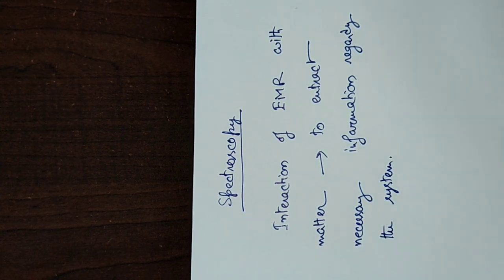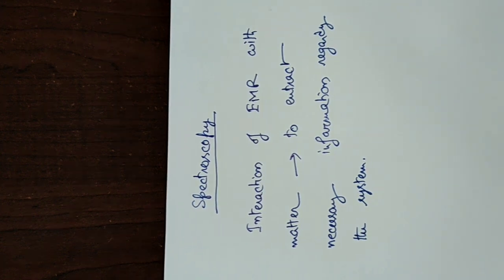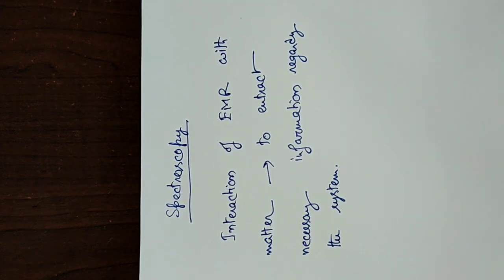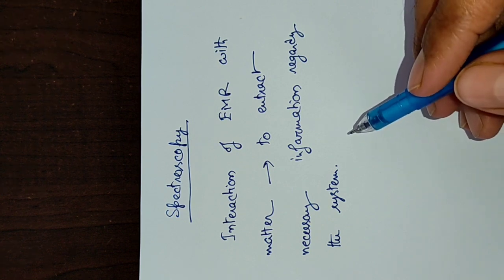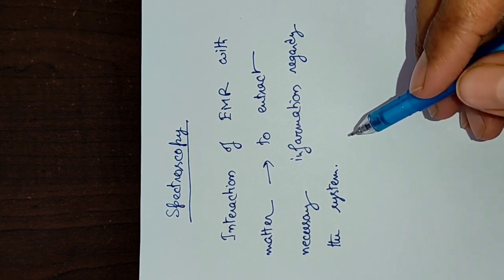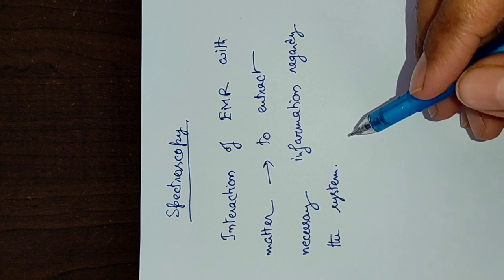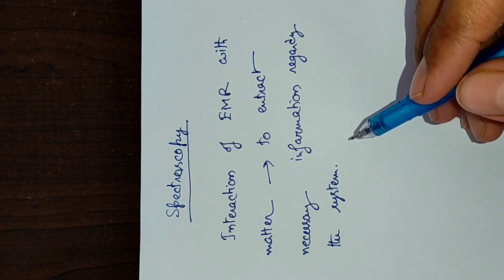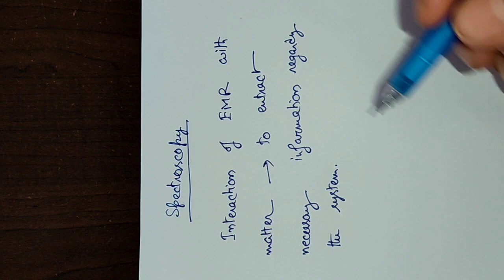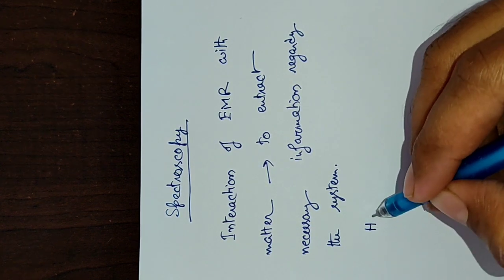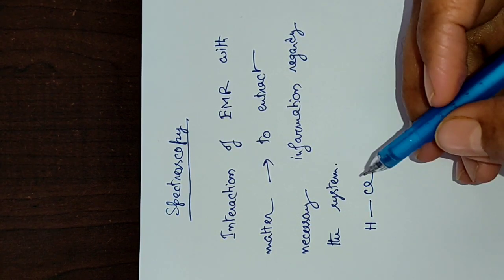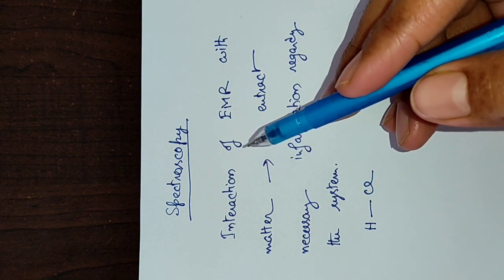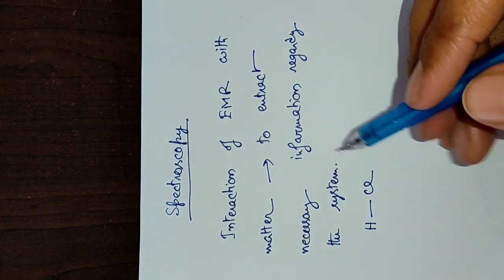For example, with the help of a tape you cannot measure the length of a bond — of a covalent bond. Now how will you get it? To have the bond length of a molecule, say HCl, you need the help of spectroscopy. What is the mechanism to get it?